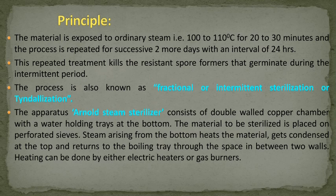The process is also known as fractional or intermittent sterilization or tyndallization. The apparatus of Arnold steam sterilization contains a double-walled copper chamber with water-holding trays at the bottom. The material to be sterilized is placed on perforated sieves. Steam arising from the bottom heats the material, gets condensed at the top and returns to the boiling tray through the space between the two walls. Heating can be done by either electric heaters or gas burners.